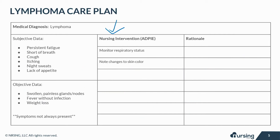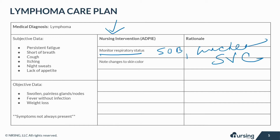Nursing interventions are a super important part of a care plan. First, monitor your patient's respiratory status. If lymph nodes of the neck and chest are involved, the patient may experience shortness of breath, dyspnea, and airway obstruction due to obstruction of the trachea or the superior vena cava. Note changes in your patient's skin color, including pallor or cyanosis. As the white blood cells multiply rapidly, it can reduce the carrying capacity of the red blood cells, resulting in hypoxemia.